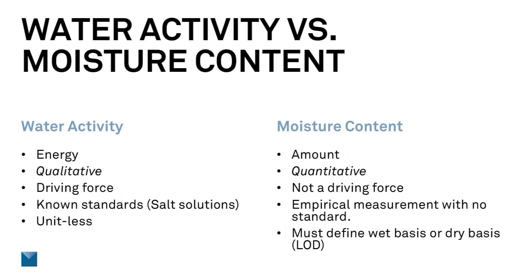With water activity, there are known standards. You can make a saturated slurry — Greenspan has a whole chart of them. If you make them correctly, they will produce a specific water activity that can be determined theoretically and then proven empirically. We've also been able to make unsaturated salt solutions that have a known water activity, based on theoretical equations, concentrations, and density, but are less susceptible to issues that make saturated salt slurries difficult to work with.